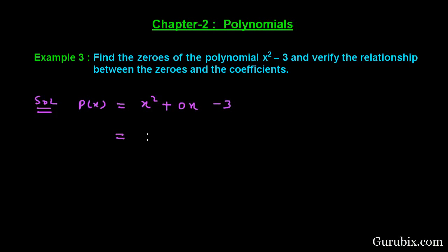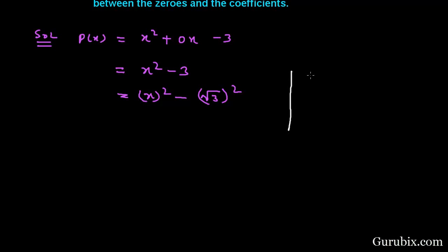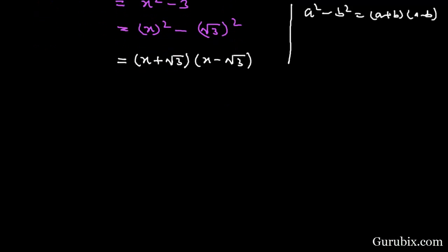Now we shall factorize this quadratic polynomial. Here we have x squared minus 3, and we can write it as x squared minus square of root 3. Now we can apply the formula: a squared minus b squared equals a plus b into a minus b. Applying this formula, it equals x plus root 3 into x minus root 3.